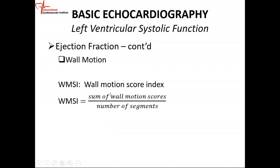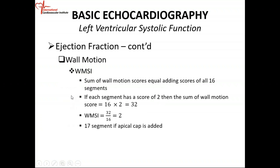When you do your wall motion score index, you get 16 segments and sum all the wall motion scores. If you look at one segment and it's thickening adequately, that will get a score of 1. If another segment is not thickening at all, that will get a score of 3 because it's akinetic. So you get 16 segments, sum the scores, then divide by the number of segments — which is 16 — and that gives you your wall motion score index.